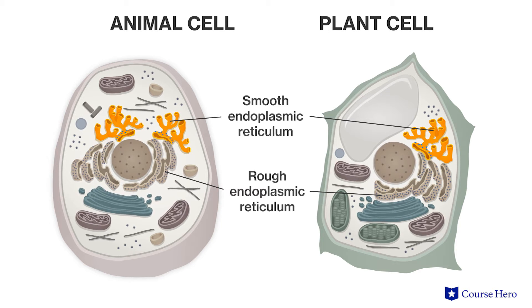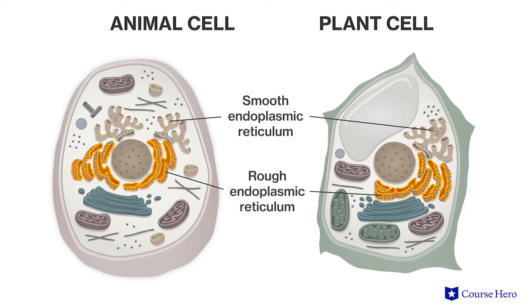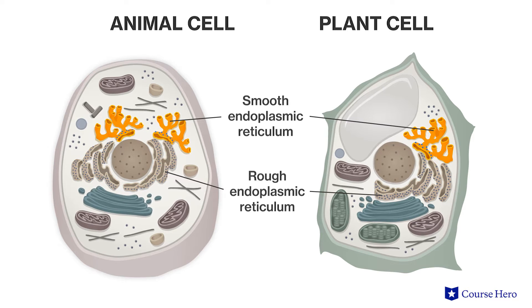One of the main functions of the rough ER is to make secretory proteins, such as insulin, which is made in pancreatic cells. The smooth ER carries out a number of functions, including the synthesis of lipids and the detoxification of poisons.